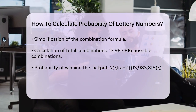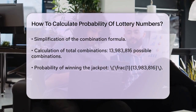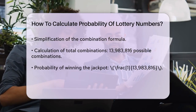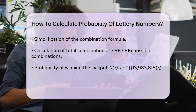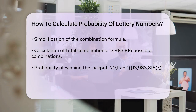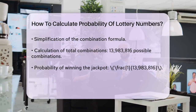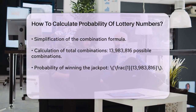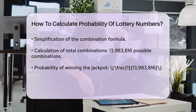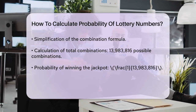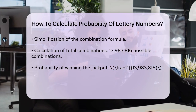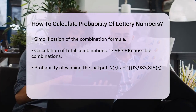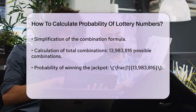Now, since there's only one winning combination — the set of numbers drawn by the lottery — the probability of winning the jackpot is 1/13,983,816. This means the odds of winning the jackpot are 1 in 13,983,816.